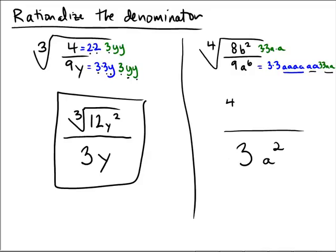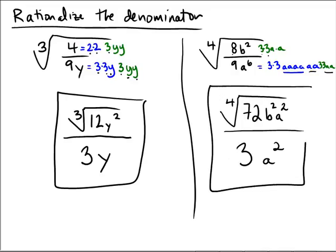In the numerator, we have a fourth radical. 8 times 3 times 3, so 8 times 9, the number 72, b squared, which was already there, and then the a squared that we had to introduce in order to simplify the denominator, to rationalize the denominator. So there's the final answer for this problem.